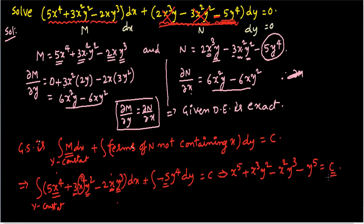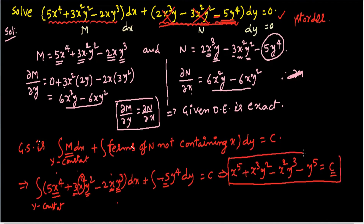Here c is the integration constant, also called an arbitrary constant or parameter. Since the given differential equation is a first-order equation, its general solution contains only one arbitrary constant. This is the required general solution. In the next video, I will give more problems on the concept of exact equations. Thank you very much.